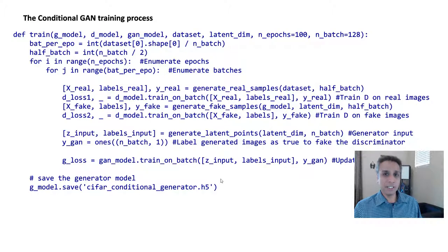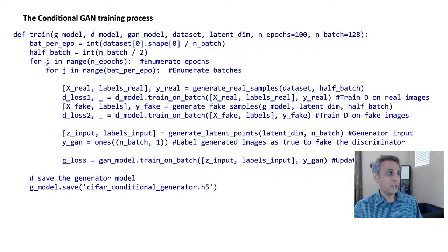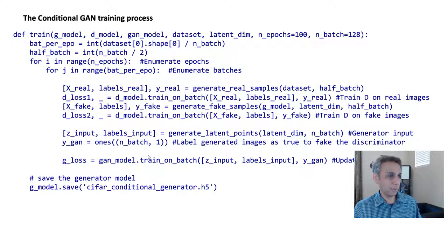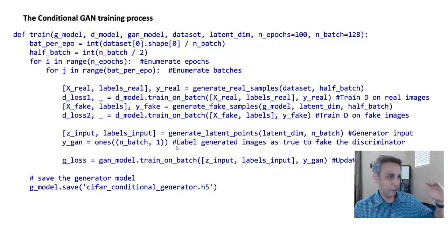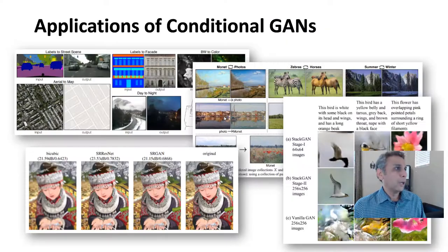Training the conditional GAN follows the same process as regular GAN training — looping over epochs and batches — except you make sure to include labels as inputs wherever you provide x values, both for the discriminator and generator training steps.